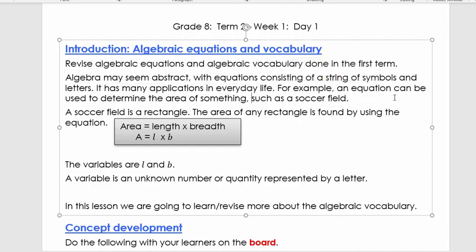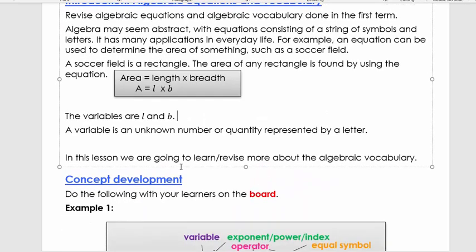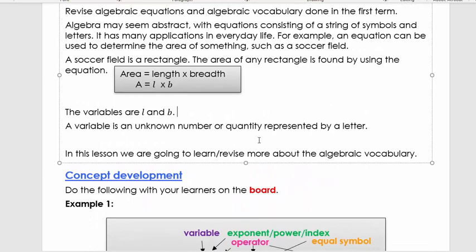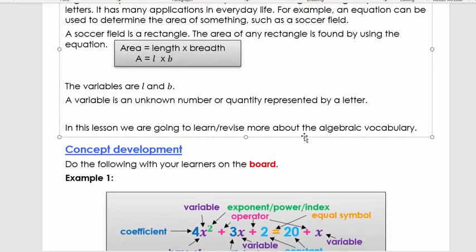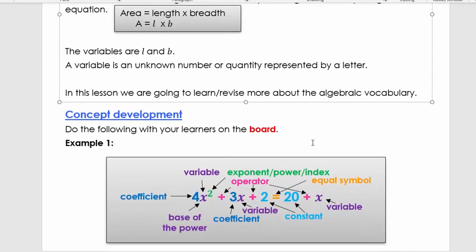For example, an equation can be used to determine the area of something, such as a soccer field. A soccer field is a rectangle. The area of any rectangle is found by using the equation: area is length times breadth. Now here, we already got an equation, a equals l times b. So the variables here are l and b. A variable is an unknown number or quantity represented by a letter. In this lesson, we're going to learn and revise more about algebraic vocabulary.